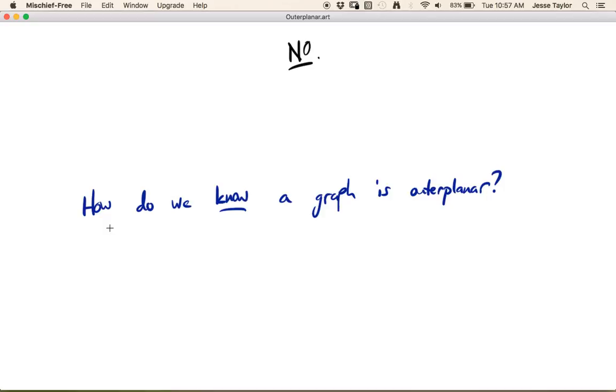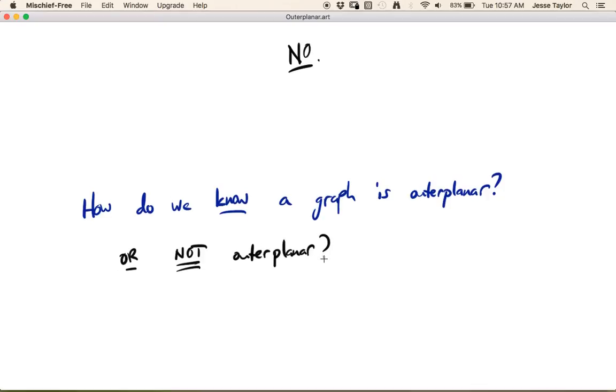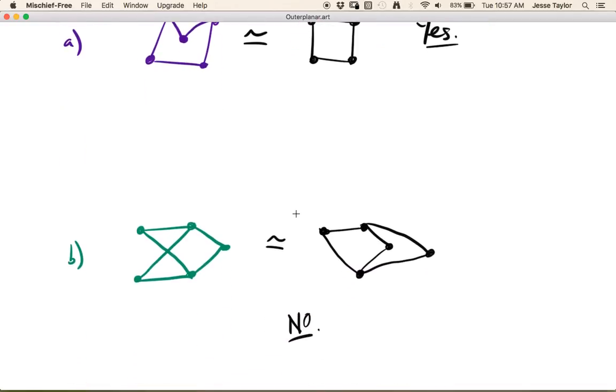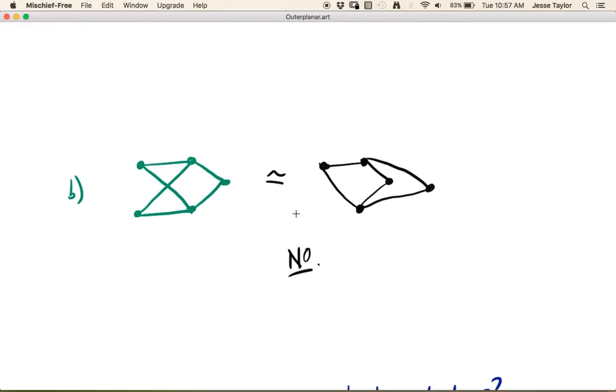So the question is, how do you know a graph is outer planar or that it's not outer planar more specifically? If it is outer planar, we can find a picture like this and the proof by picture is fine. Yes, it is. We can draw it like this, see? But when it's not, you need some sort of leverage, some sort of way to explain your reasoning. Hopefully we can all look at this and be like, okay, yes, there's no way for me to draw this. It's a pretty small graph. It's pretty simple.